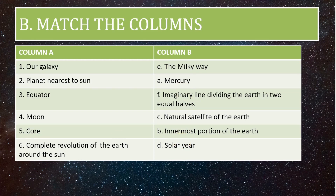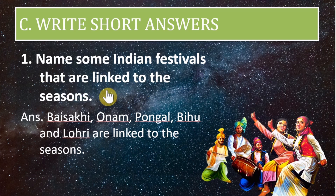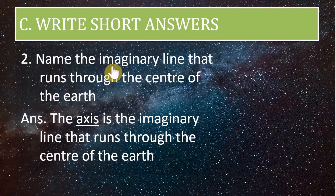Now let us move on to short answers. First question: name some Indian festivals that are linked to the seasons. The answer: Baisakhi, Onam, Bawi, Bihu, and Lori are linked to the seasons. Second short answer: name the imaginary line that runs through the center of the earth.